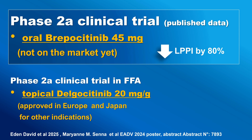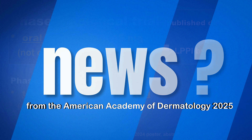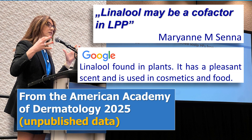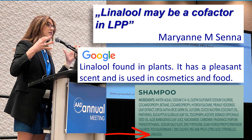There is also a study in frontal fibrosing alopecia with a topical JAK inhibitor. From the AED, Mariana Sena mentioned that linalool may be a cofactor in LPP. Linalool is found in plants, has a pleasant scent, and is used in cosmetics and food. Checking the ingredients of various shampoos confirmed that many do contain linalool.